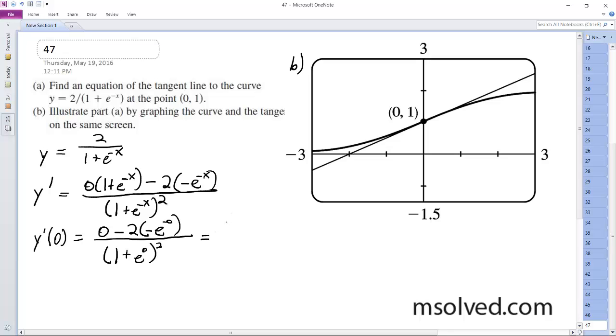So this ends up being 2, and then 1 plus that over 1. Wait, hold on - e raised to the 0 is 1, so it's 2, so 2 squared is 4, so it's 1 half.